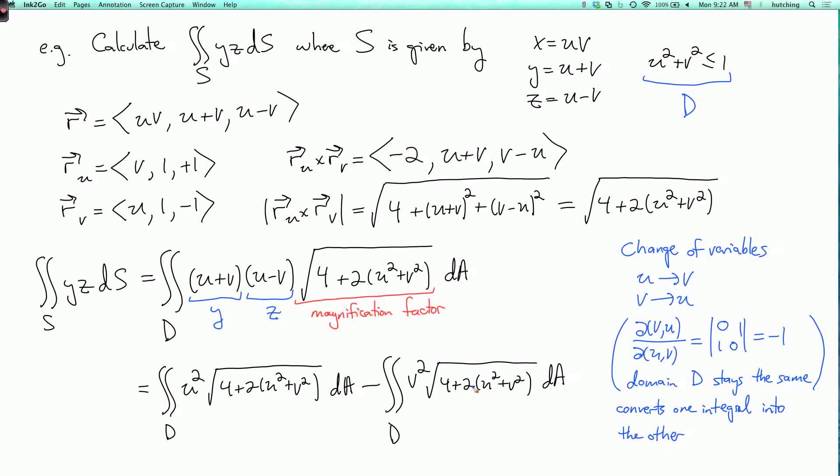So these two integrals that we're subtracting are equal and their difference is 0. That's another useful application of change of variables, by the way. If you have two integrals which look almost the same, then sometimes you can use change of variables to argue that their values are equal and so that when you subtract them, they cancel out. So that's integration over a surface with respect to surface area. And in the next lecture segment, we will discuss integration of a vector field over a surface.